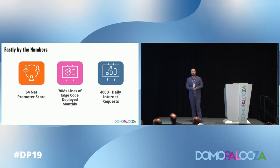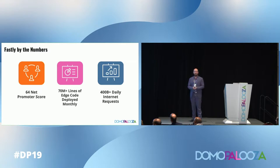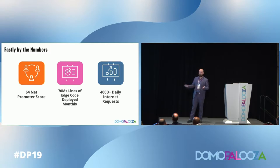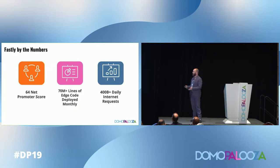Some marketing numbers: we have a 74 net promoter score. Our customers love us and we're very flexible — your configurations are owned by you, you choose when they update and how they're managed. We deploy about 70 million lines of edge code monthly, meaning customers are constantly engaging and adding new snippets. We serve about 400 billion daily internet requests. That's Fastly — that's who we are and that's our pitch. Let's talk now about Domo.